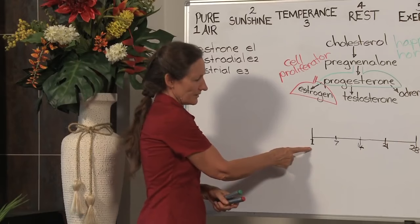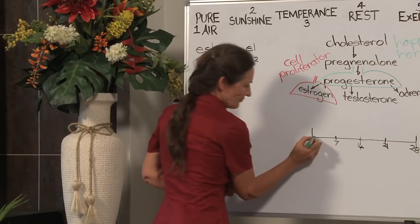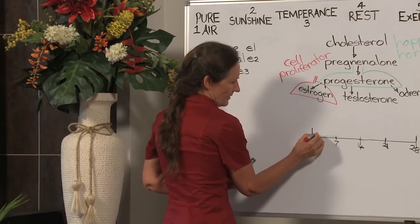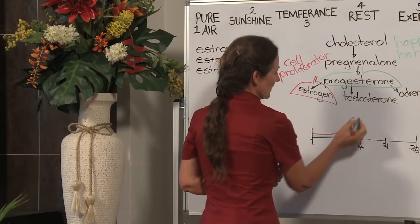Day one of the cycle is the day that a woman begins to menstruate, and day one progesterone levels are low or progesterone is backstage so to speak. Day one estrogen levels are also low, but by day seven estrogen levels rise up until day 11. Estrogen is now the star player in the dance.